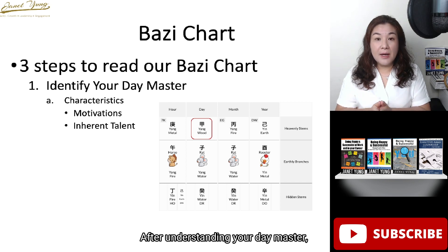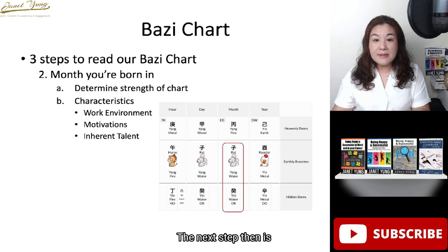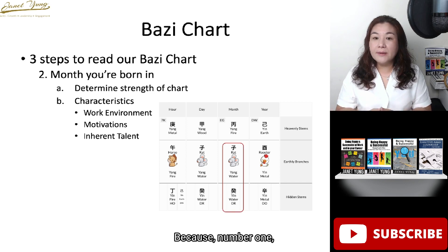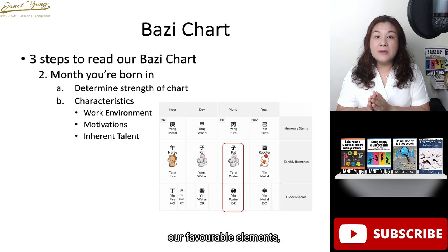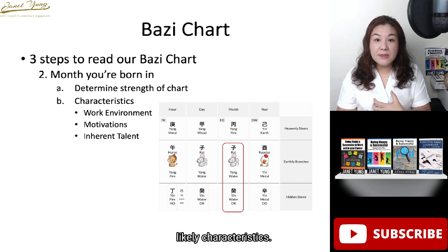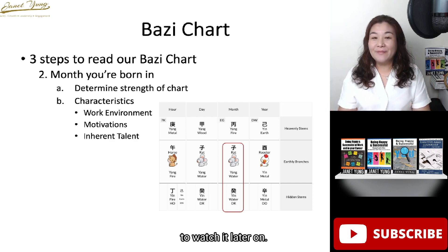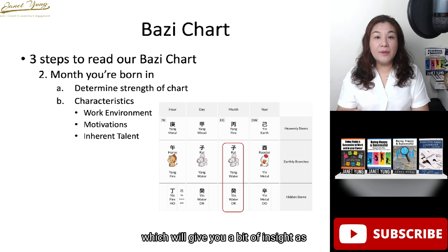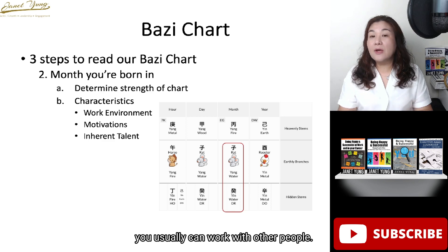After understanding your day master — what you like to do and don't like to do — the next step is looking at the month that you are born in. This helps us determine the strength of our chart, which will also tell us our favorable elements, favorable industries, and our likely characteristics. After determining the strength of your chart, it gives you insight as to how you view the world, whether you are generally stronger in characteristics or you usually work well with other people.